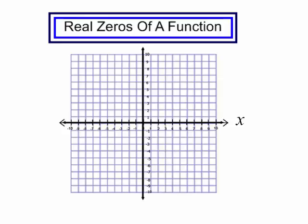We are going to talk about the real zeros of a function. The real zeros of a function occur when the graph crosses the x-axis, or when y is equal to 0, or the function is equal to 0.